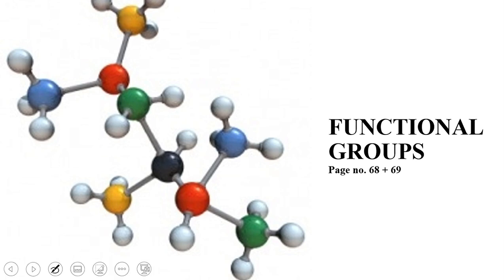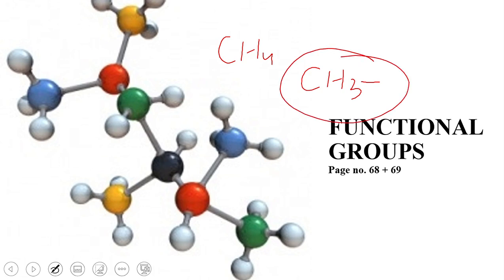We studied alkanes and alkyl radicals, and we said jab kabhi bhi alkanes mein se hum ek hydrogen remove karte hain, the resultant product jo hume milta hai, usse hum kehte hain ek alkyl radical. Jaise ke humare paas hai methane CH4, agar isme se hum ek hydrogen remove kar dein, to yeh ban jayega CH3 with a free bond, kyunke ab is carbon ki valency poori nahi hai.